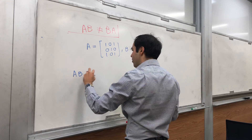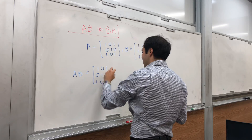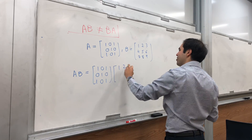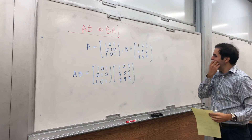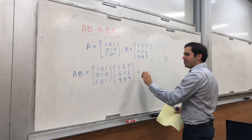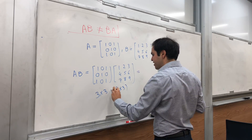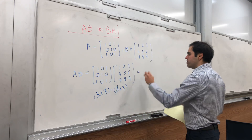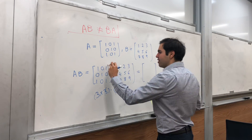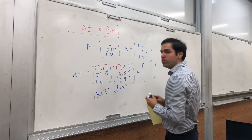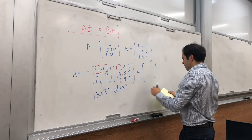Let's calculate AB. Well, AB is the matrix A times B. We have a 3 by 3 matrix here and a 3 by 3 matrix here, so the inner parts cancel out and we still get a 3 by 3 matrix. Now remember how to multiply matrices: you start with the first row and the first column and take the dot product. So, 1 times 1 plus 0 times 4 plus 1 times 7, which gives you 8.